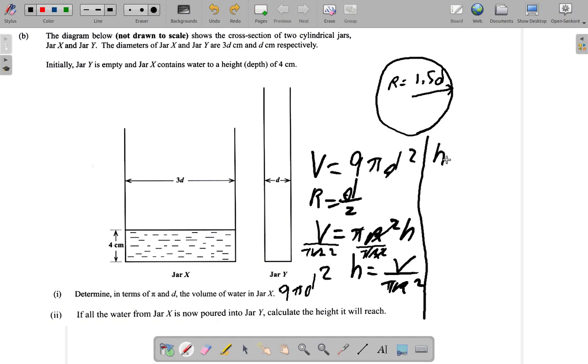The height for jar y will be the volume V, and V remains 9πd² over π times r squared. What r now changes. The radius of jar y is d over 2, so it's d over 2 all squared. That's the πr².